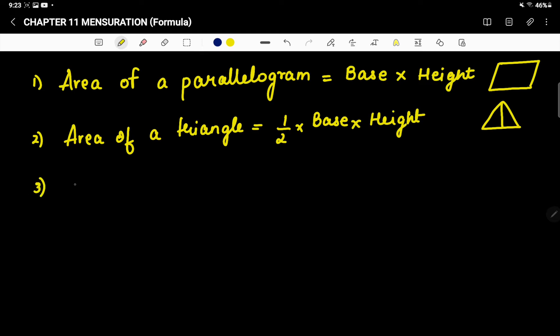Third one is area of a trapezium. That is half into sum of parallel sides into height.